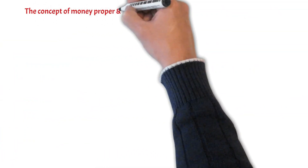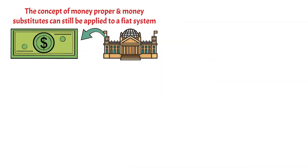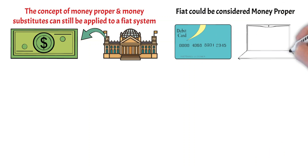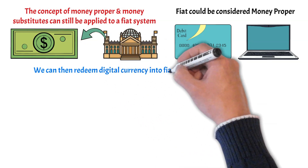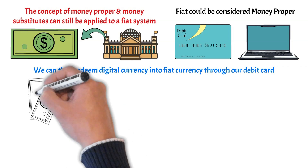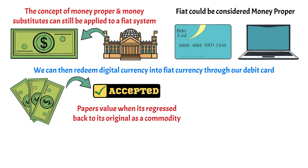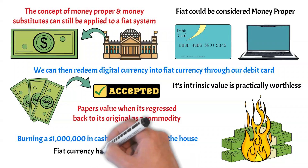The concept of money proper and money substitutes can still be applied to a fiat system. Government-issued paper bills could be considered money proper, and money substitutes are our debit cards or the digital currency we transfer online, which can be redeemed into fiat currency through debit cards. However, although fiat currency is accepted as money, paper's value when regressed back to its origins as a commodity is practically worthless. You could probably burn a million dollars in cash and it would barely heat the house for an hour. Fiat currency has no intrinsic value.